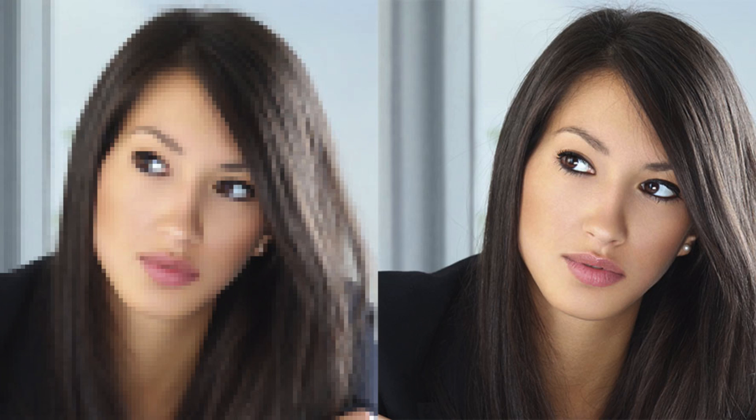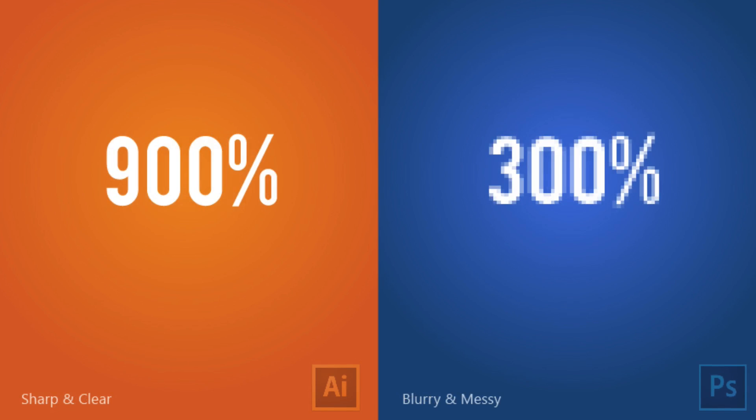When you search up an image online and zoom all the way in, you're going to see little squares — those are pixels. In Illustrator it's not like that. You can scale up to 100% or even 1000% and you won't see pixels, because it's a vector-based program — everything stays sharp and clear. Whereas in Photoshop, if you zoom in to say 500% or 300%, it's going to be very blurry and messy.